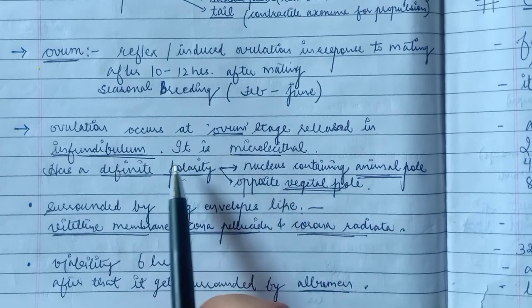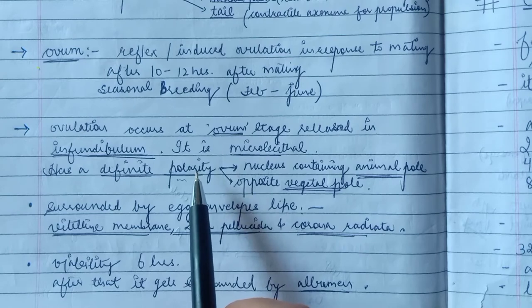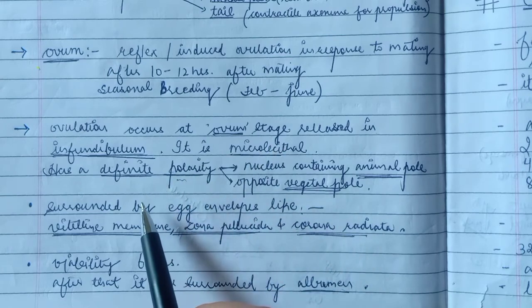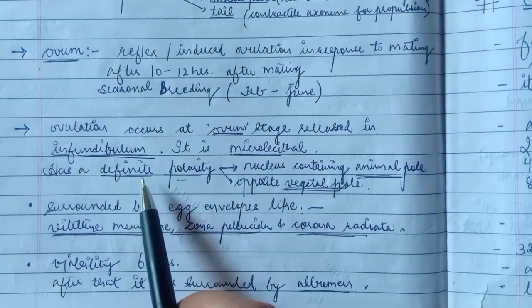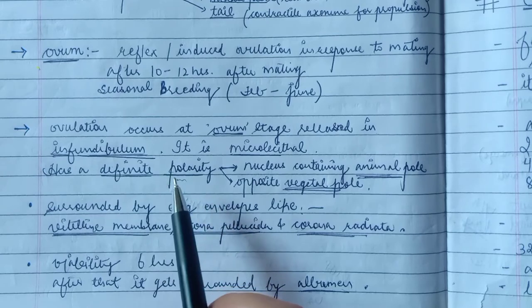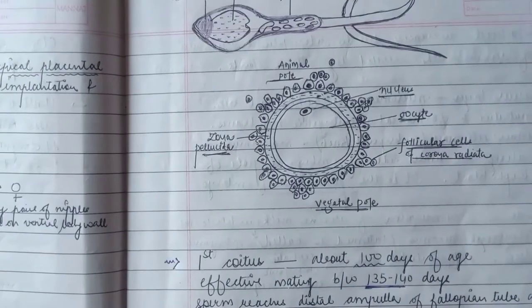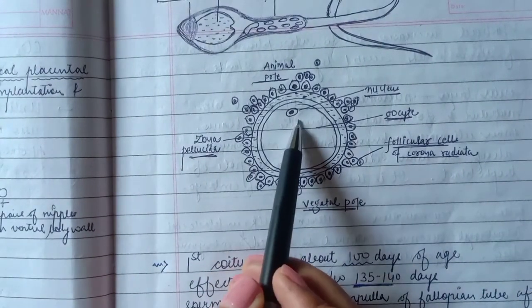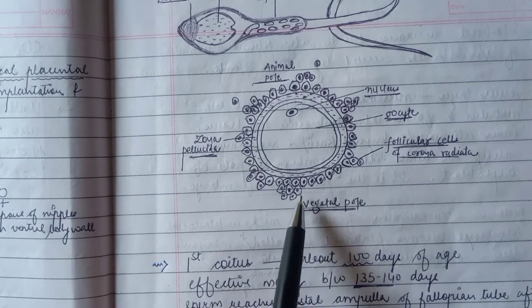This egg is microlecithal, which means less amount of yolk is present. Micro means less, lecithal is related to yolk. So less amount of yolk. Now the egg or ovum has definite polarity. Let's see here. This is the ovum. Now the ovum has definite polarity. This is the nucleus-containing pole, this is the animal pole. The opposite pole is the vegetal pole.